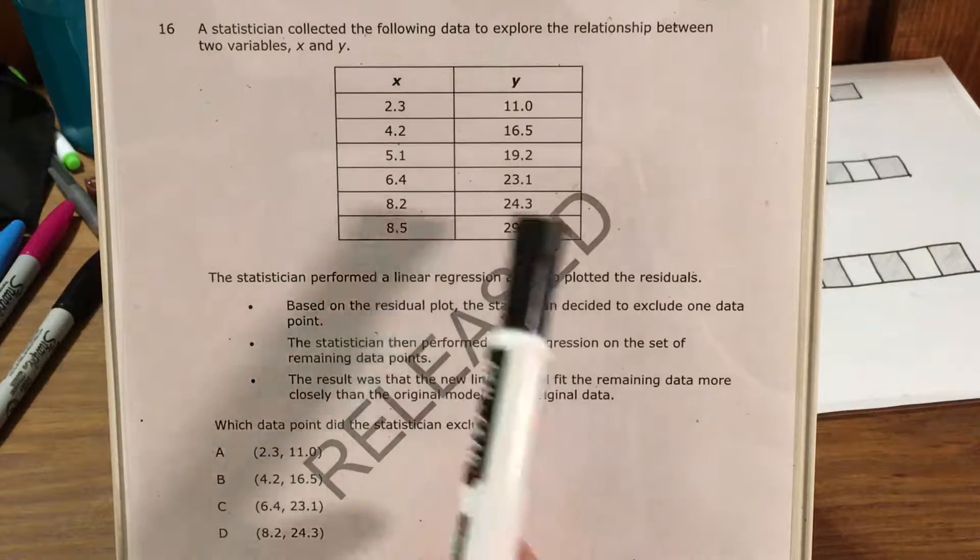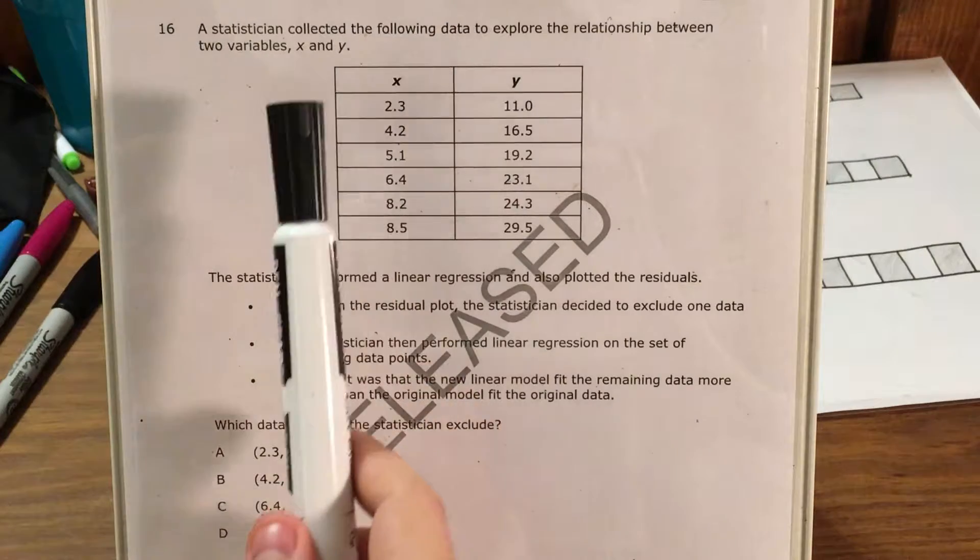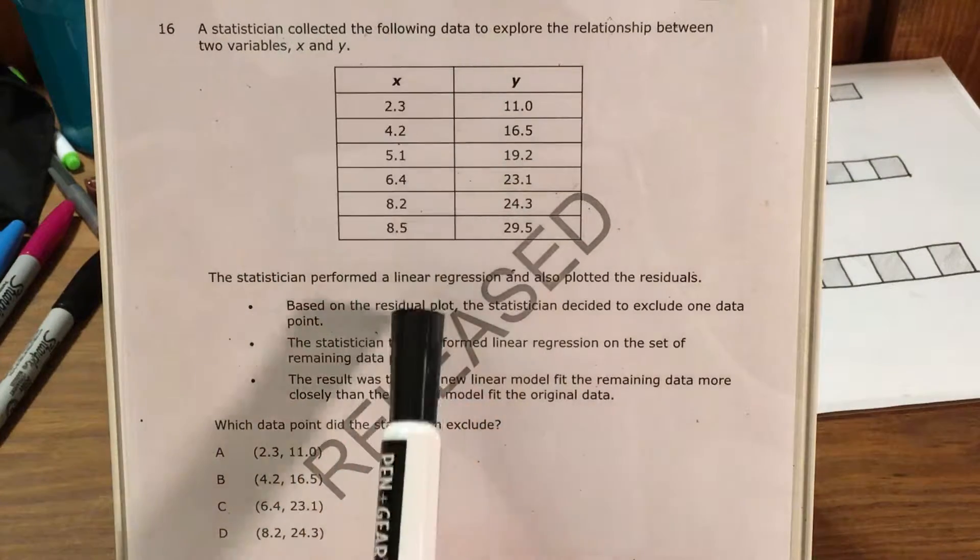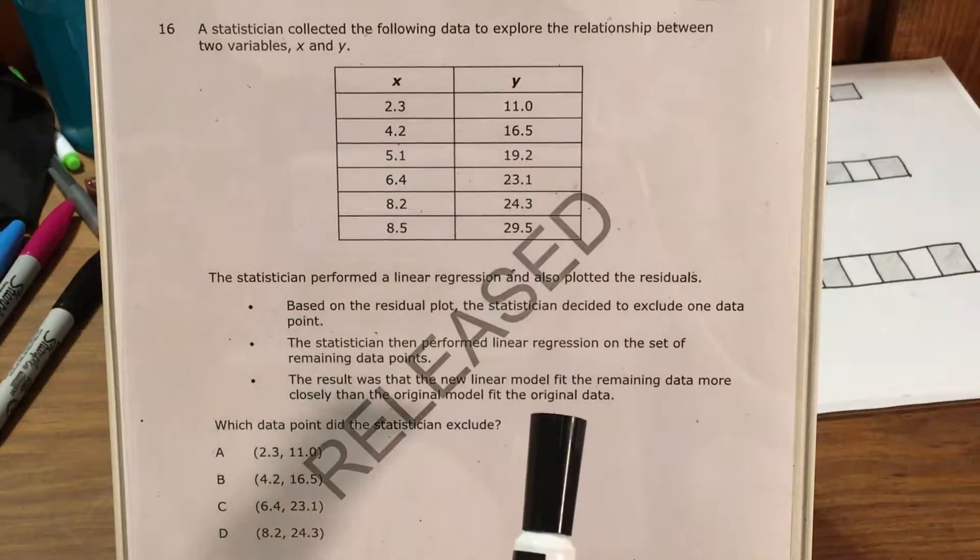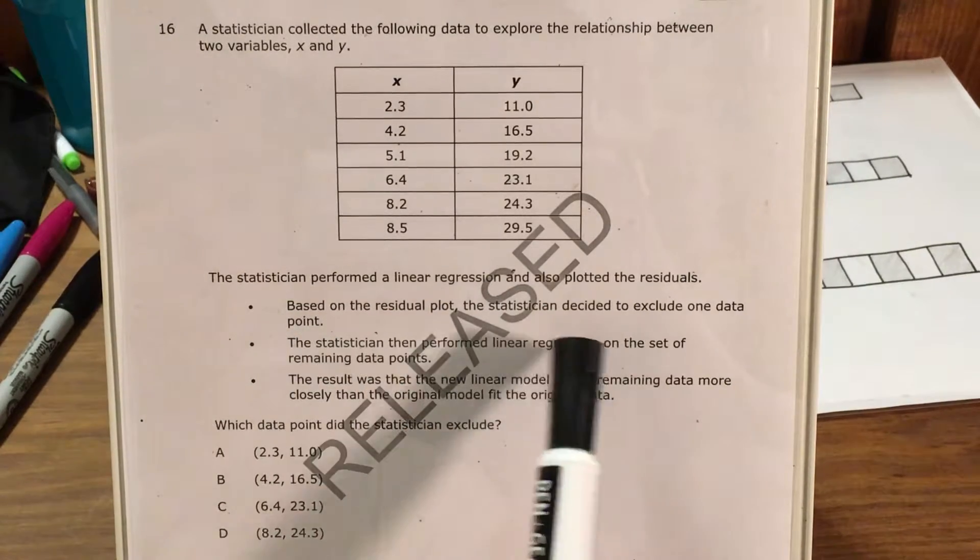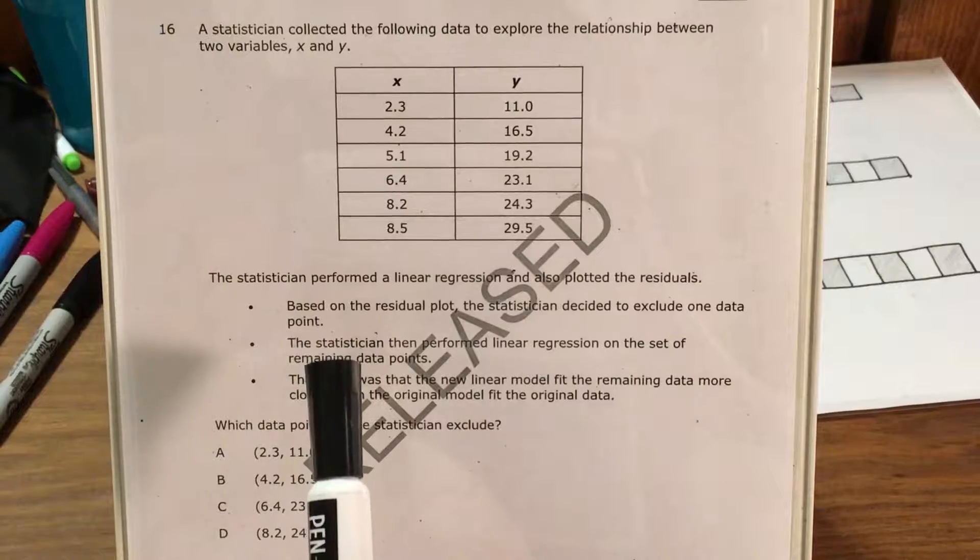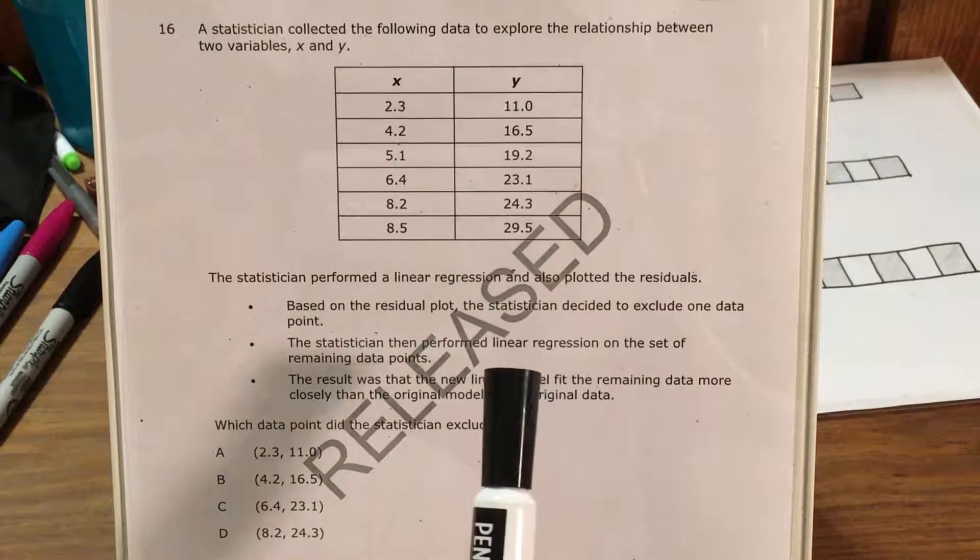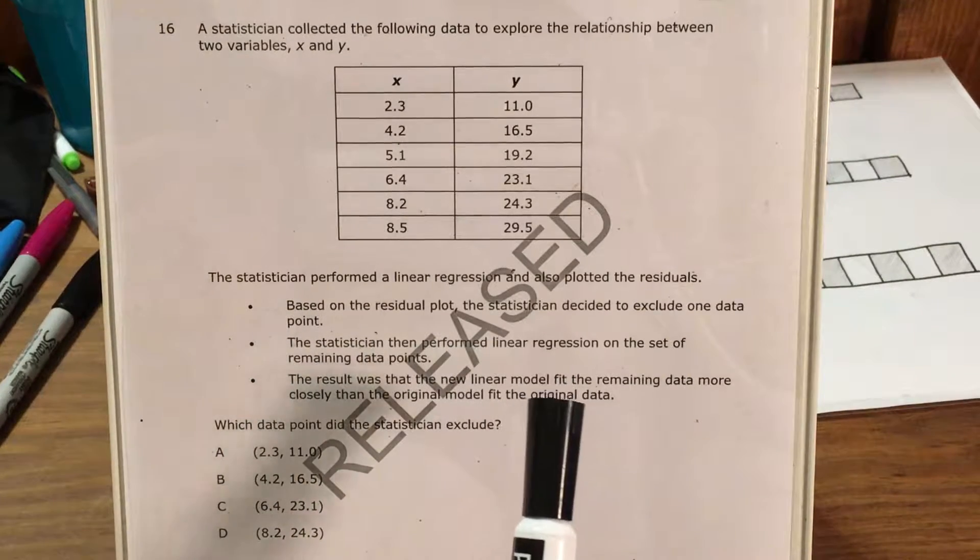So this question has a lot of information and a lot of words, but essentially a statistician used these x values and these y values to do some linear regression and he decided to take out one of the points and taking out that one point made the new linear model a much better fit than the old one.